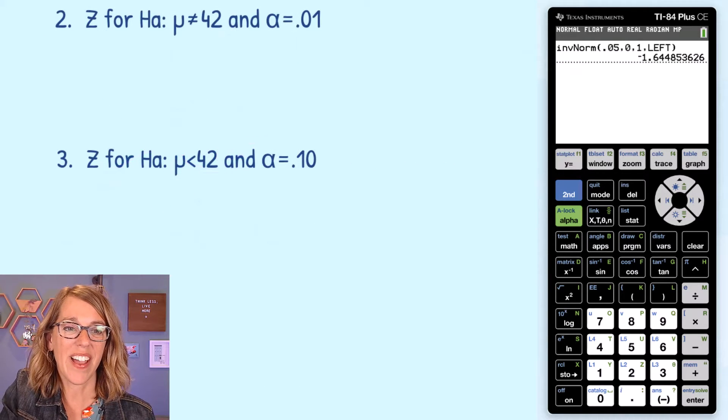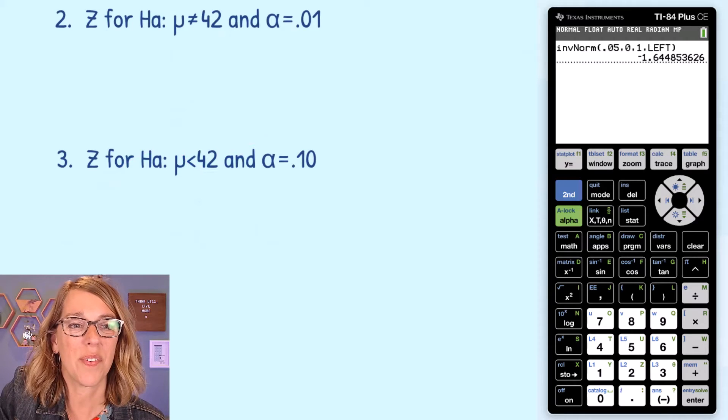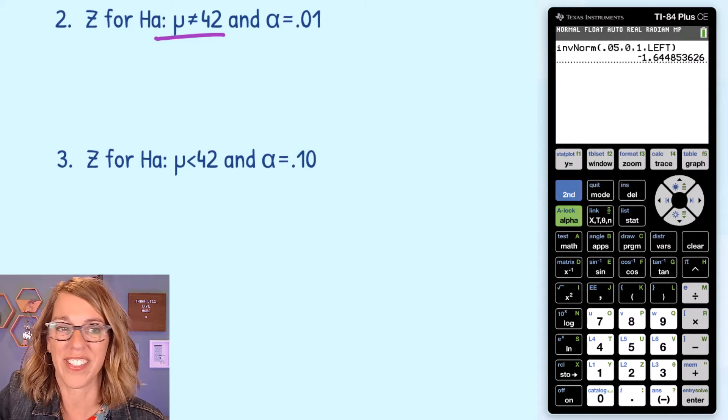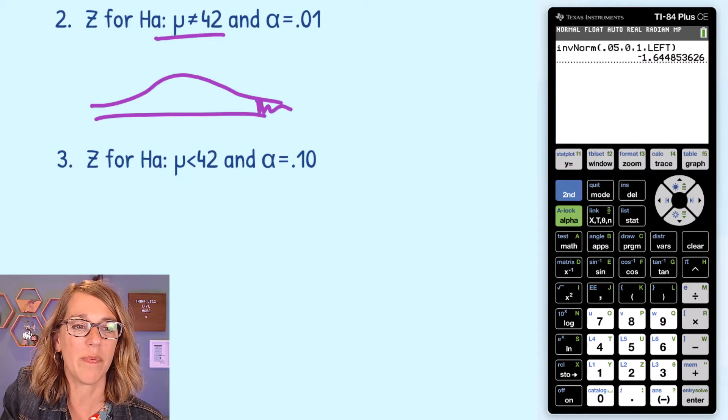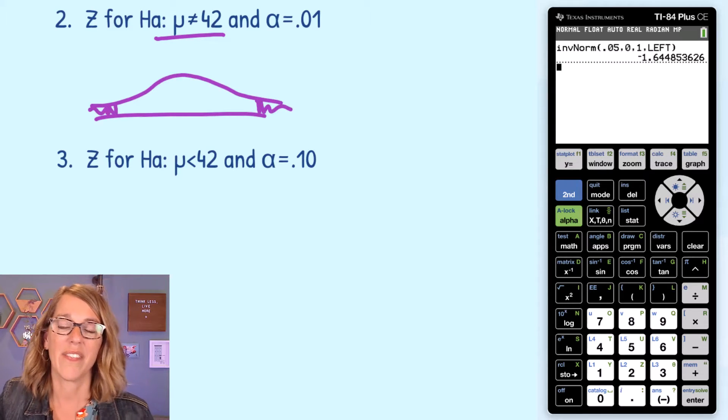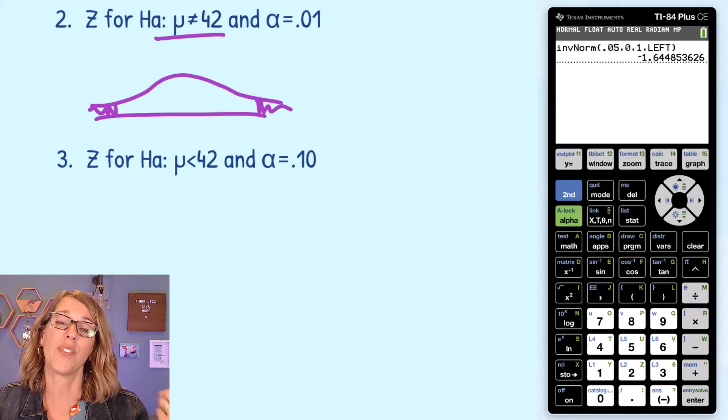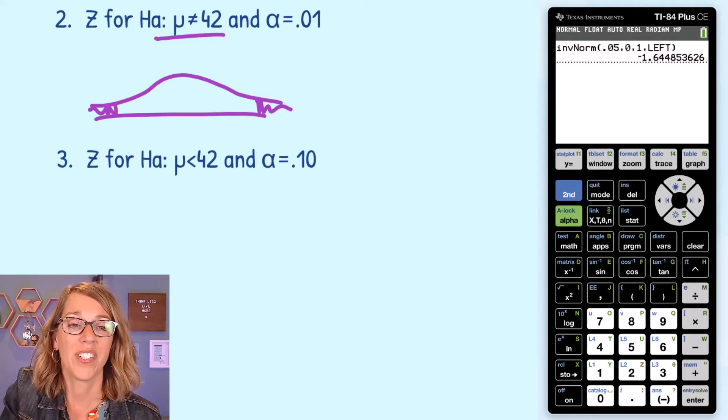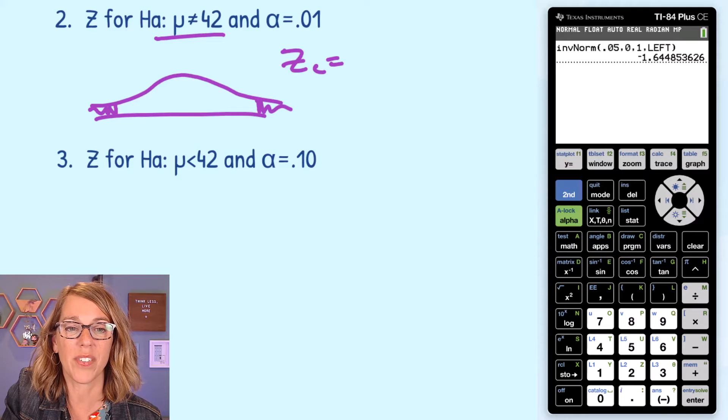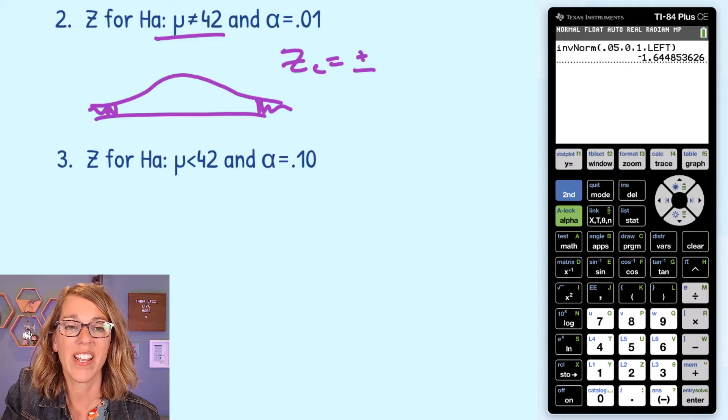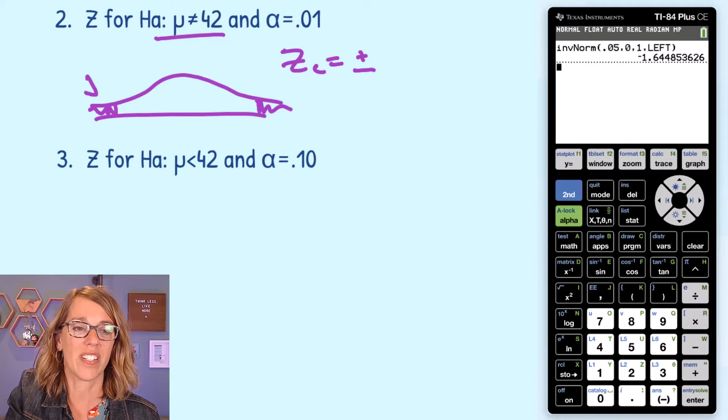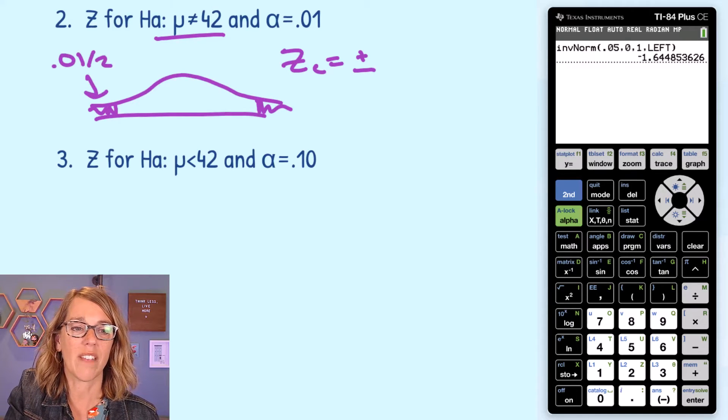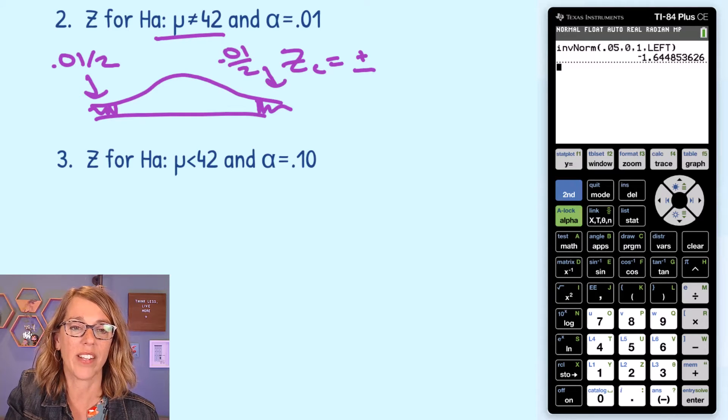In this next one, I've got not equals 42 for my alternative hypothesis. That means that I have a two-tailed test. So I would be significant if I were either greater than 42 or less than 42. So I know that as I'm looking for these critical z values, it's going to be a plus or minus. Now this 0.01 is the total area in those rejection regions. So in either one of these regions, I've got 0.01, that total area, divided by 2.